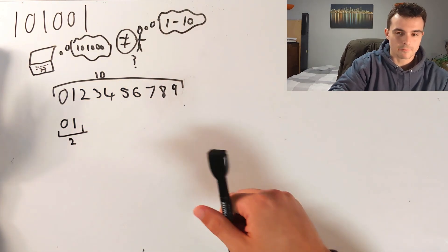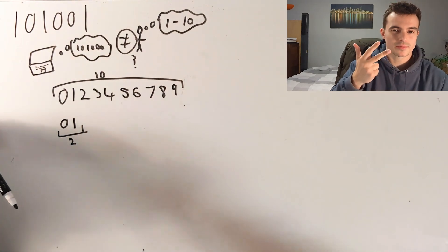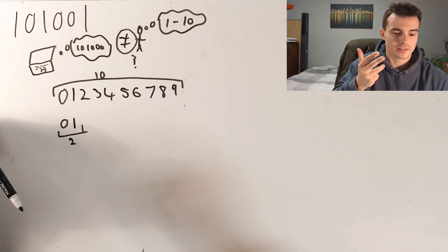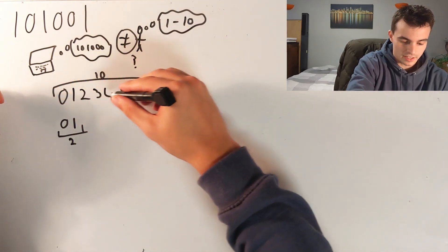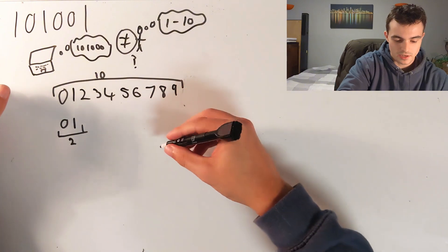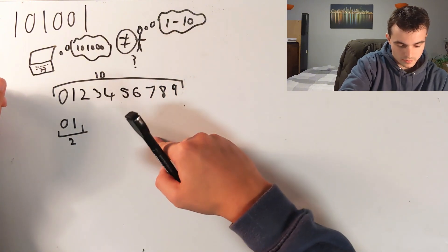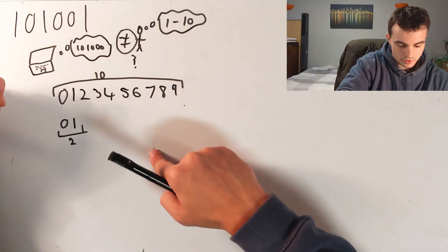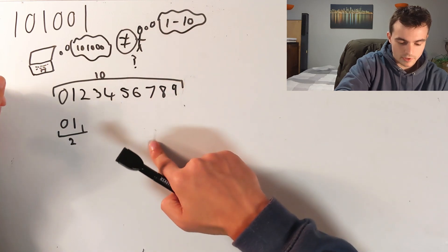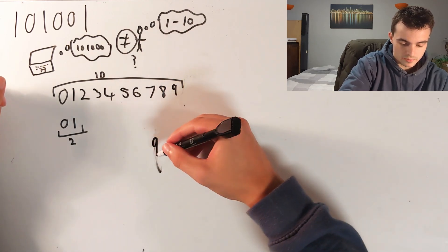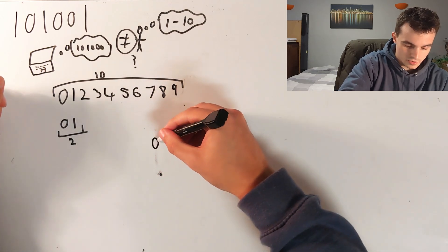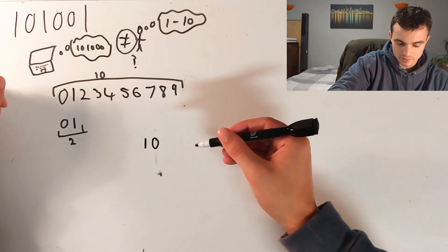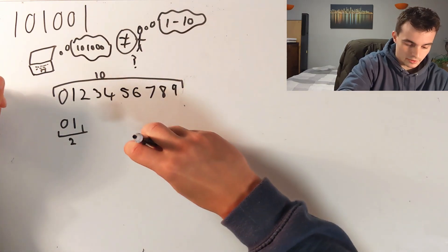And when we are counting in decimal with ten numbers, we say one, two, three. And when we get to nine, we go back to zero and we put a one here. And then we carry on.